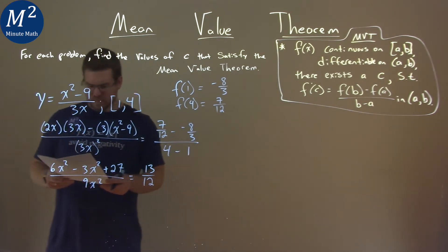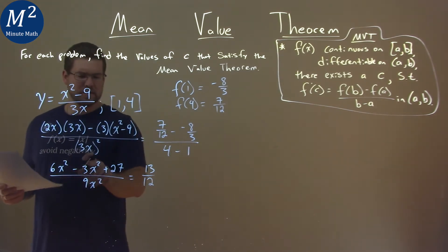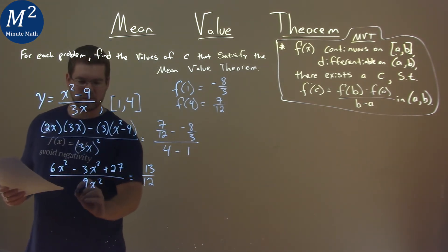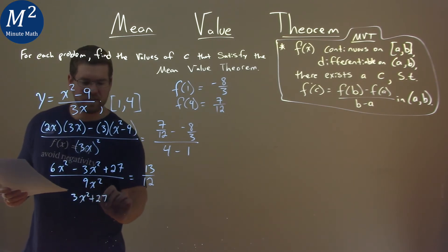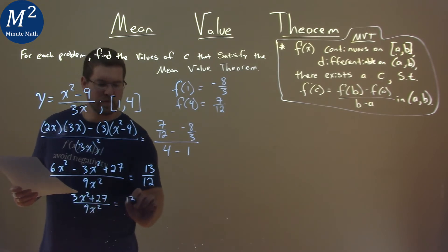At this point, I simplify actually just a little bit, 6x squared minus 3x squared is 3x squared plus 27. I almost got ahead of myself here. And 9x squared, and that's equal to 13 over 12.